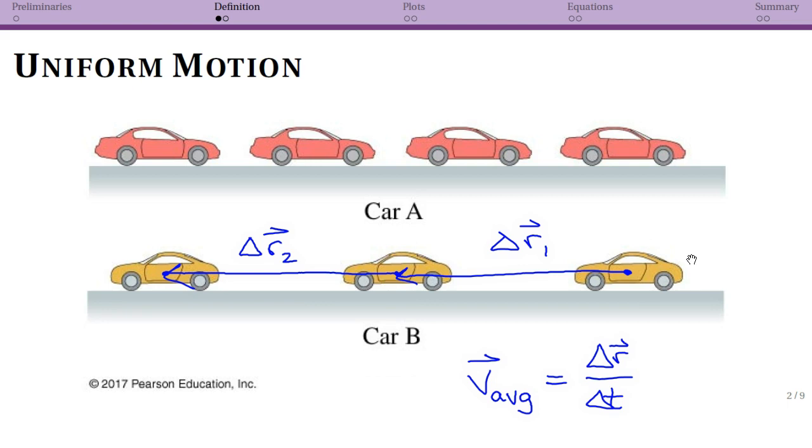So whenever we're talking about uniform motion, we're assuming that this average velocity vector that we're drawing every time is not changing. So if you have a situation where you can clearly see that your object is not covering the same distance in every time interval, it would not be appropriate to apply uniform motion as a model in that situation.